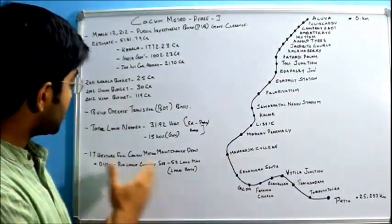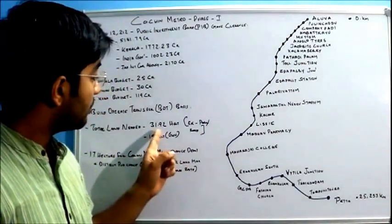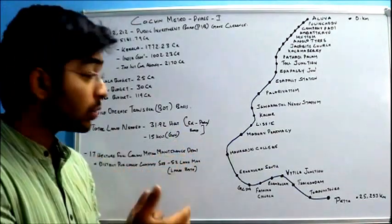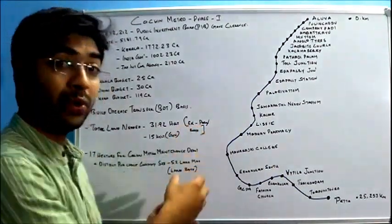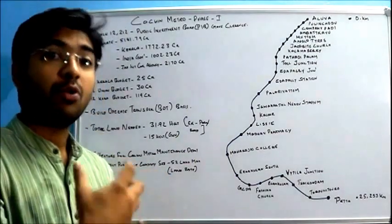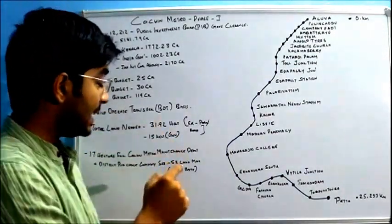If you look at land acquisition, total land needed for this project is 31.92 hectares of land, excluding the parking and the road. When we consider parking and road facility for the Metro Rail, more land will be required. But currently for the project, it is 31.92 hectares of land.